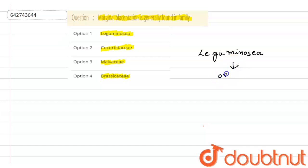The ovules are attached to the margins, and these are formed by the fusion of two carpels.